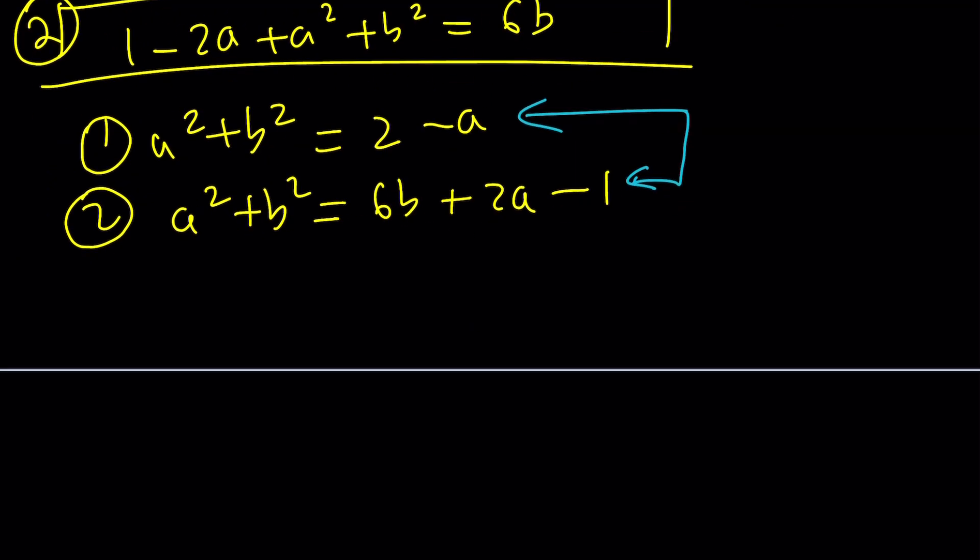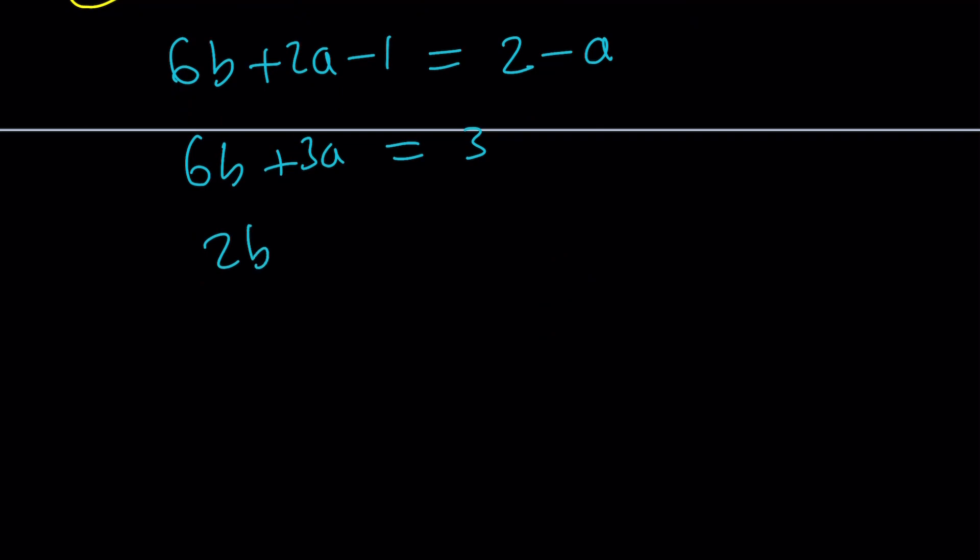Let's set them equal to each other. 6B plus 2A minus 1 equals 2 minus A. How do we simplify this? Let's put everything on the same side and numbers on the other side. So 6B plus 3A is equal to 3. Divide everything by 3. 2B plus A equals 1. This is nice because I can solve for A and substitute. A equals 1 minus 2B.